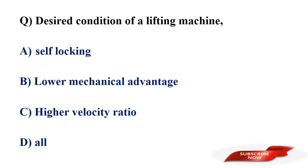The desired condition of a lifting machine is? Options: self-locking, lower mechanical advantage, higher velocity ratio, all of those. Answer: option A, self-locking. The desired condition of a lifting machine is self-locking.